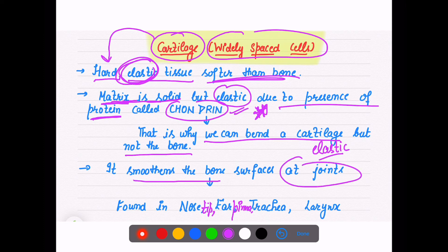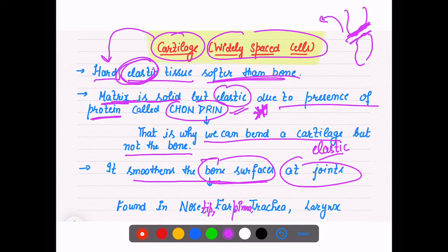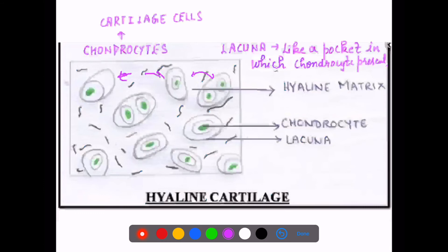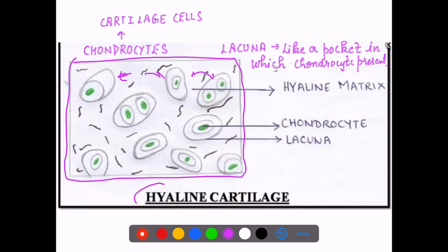Touch your ear pinna — the outer part — that is made up of cartilage. Nose tip is also made up of cartilage because it is elastic. Cartilage smoothens the bone surface at the joints — two hard, round surfaces cannot join directly, so cartilage softens the bone surface, especially where two bones have to join at the joints. It is found in the nose tip, ear pinna, trachea, and larynx — your voice box.